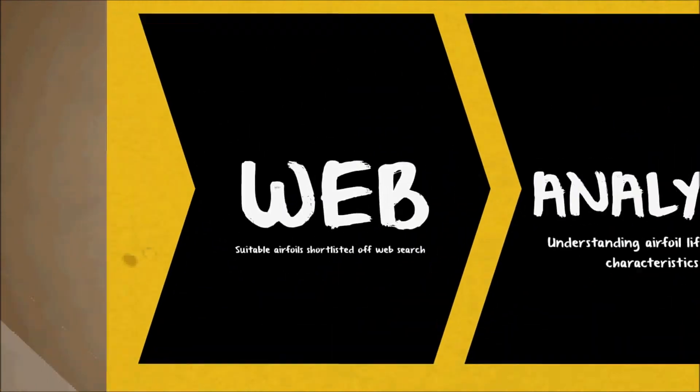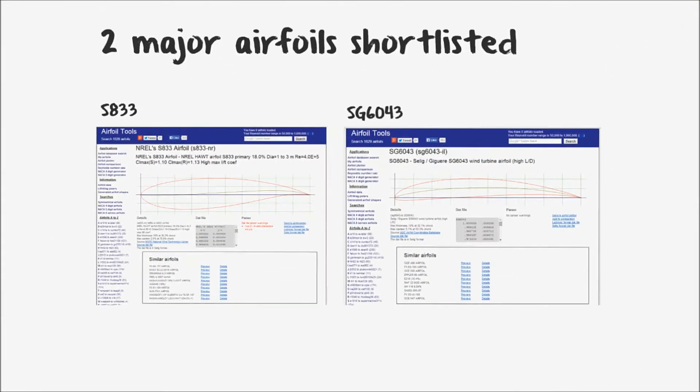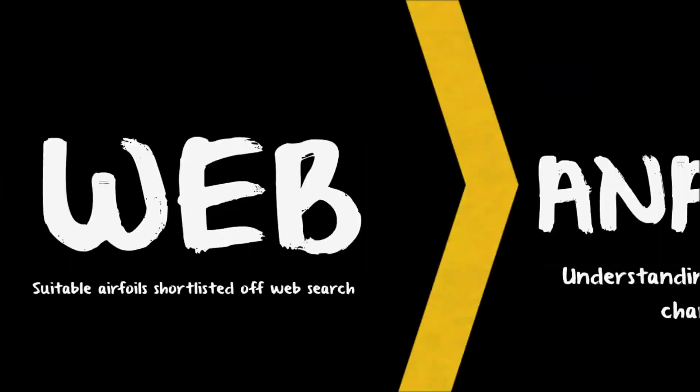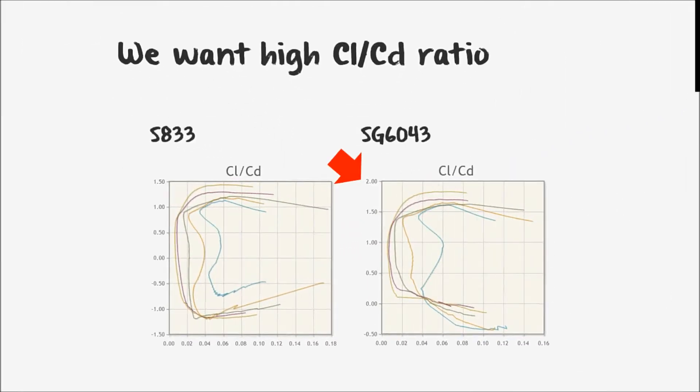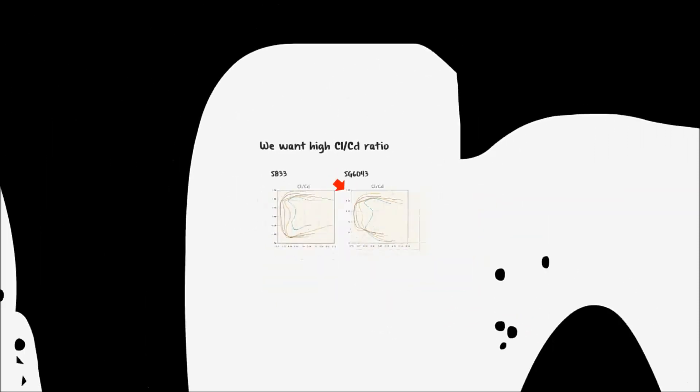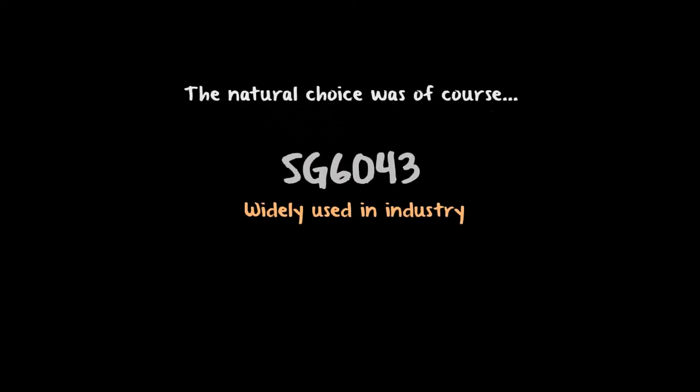First, we searched the web and we shortlisted two airfoils, the S833 and the SG6043. Next, we analyzed both using online tools and we found the characteristic plots of both airfoils. Notice that regardless of Reynolds number, the SG6043 gives higher lift over drag ratios. And so finally, we chose the airfoil, and you would have guessed it, we picked the SG6043.